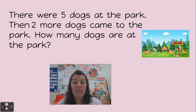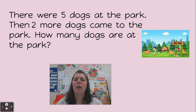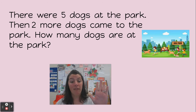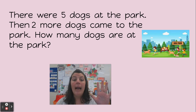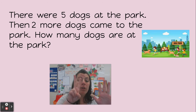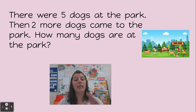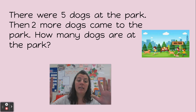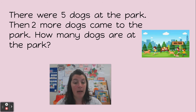The first thing I did was think about what am I trying to figure out? I'm trying to figure out how many dogs are at the park — that's what my question is. Then I thought, what do I already know? I know that there were five dogs at the park already and then two more dogs came. So I'm putting together the dogs that were already at the park and the dogs that came to figure out how many dogs are at the park.